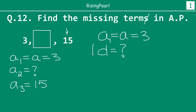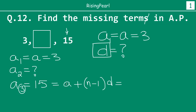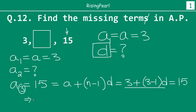Let us assume the common difference is d. From the last webisode, the nth term formula is a + (n−1)×d. For the third term, we substitute: 3 + (3−1)×d = 15, which gives us 3 + 2d = 15. This is a linear equation with one unknown, d.